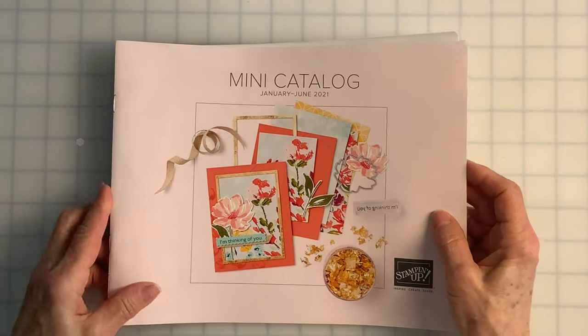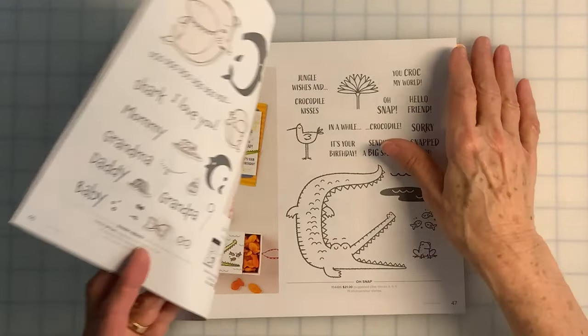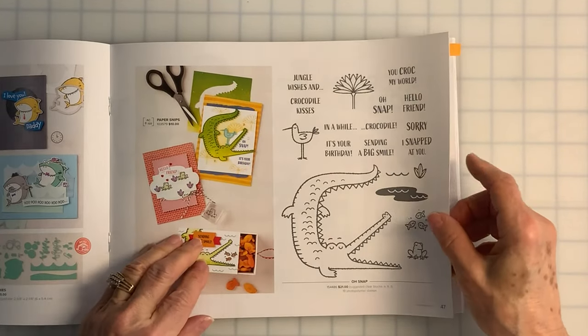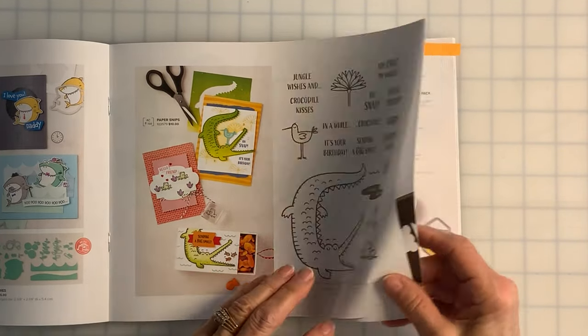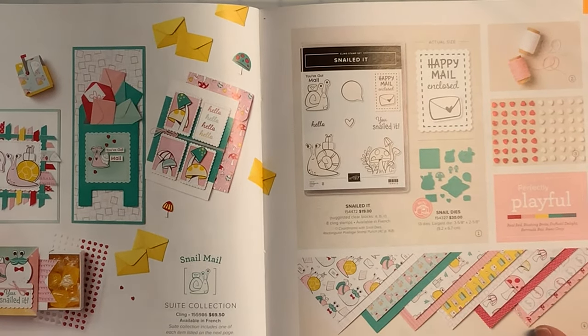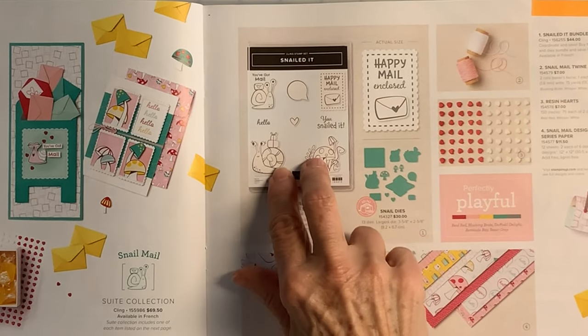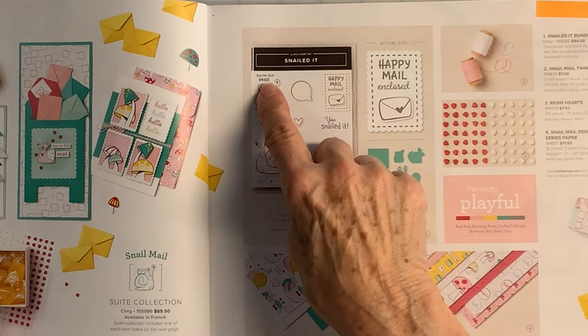The current Stampin' Up! mini catalog has several very cute stamp and die sets. My first choice is a set called Snailed It. It's about getting snail mail. I like the whimsical style of the snail and mushroom stamps, and the fun 'you've got mail' sentiment.